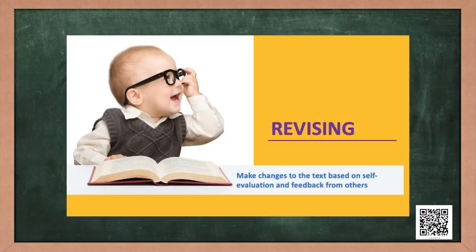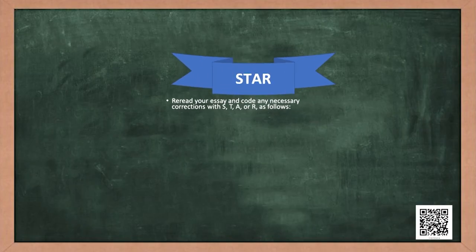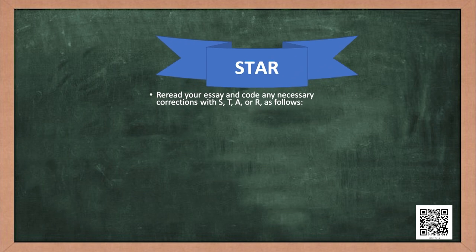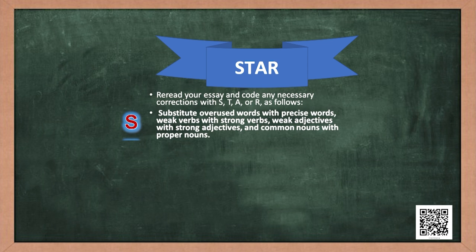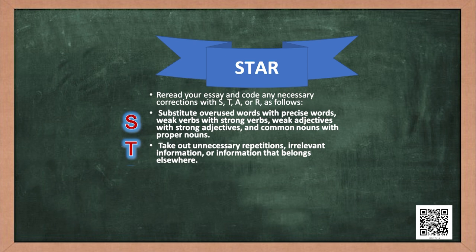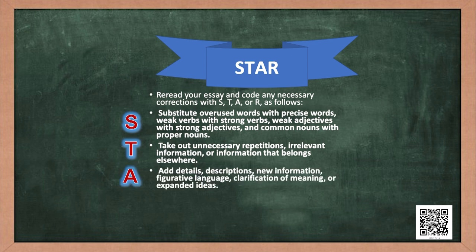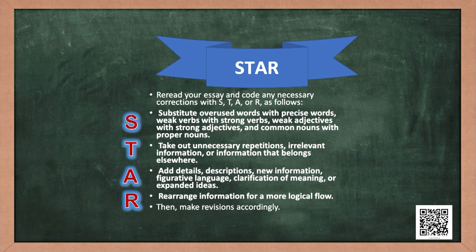Wonderful! Now the last stage — revising. It is very important to read your article again and revise, making changes based on self-evaluation and feedback from others. The strategy for this is called STAR: S — Substitute overuse words with precise words, weak verbs with strong verbs, weak adjectives with strong adjectives, and common nouns with proper nouns; T — Take out unnecessary repetitions, irrelevant information, or information that belongs elsewhere; A — Add details, descriptions, new information, figurative language, or clarification of meaning; R — Rearrange information for a more logical flow, then make revisions accordingly.